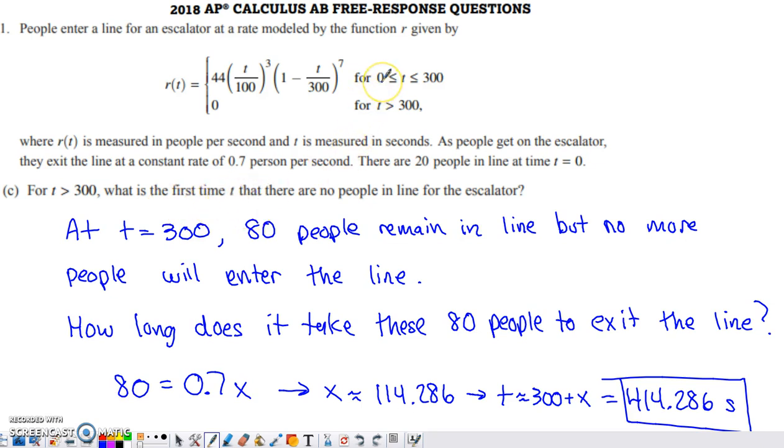But here's the catch. It says what is the first time T? T begins at 0 and we're considering time values above 300 right now. This is how many seconds beyond 300 seconds it's going to take. So the value of T when there's not going to be anyone left in line is this value tacked on to the 300, which ends up being 414.286 seconds.